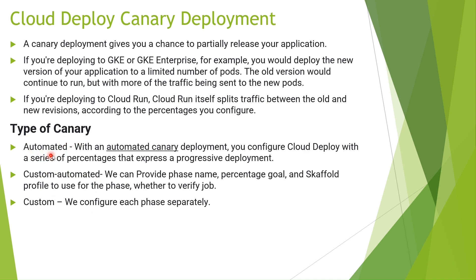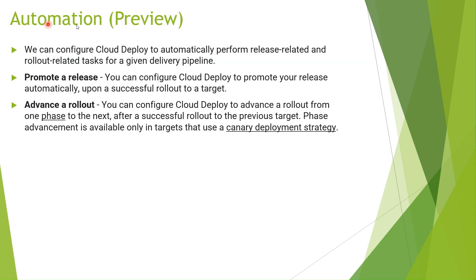In automated canary, we just provide a series of percentages for progressive deployment - like 20, 50, 80. We will check out how to configure that. After automated we have custom automated, where we can provide everything like phase name, percentage, goal, and scaffold profile. After that we have custom, where we configure each phase separately. I can show you the automated one - you just create a canary deployment and it does all the things. For custom automated it requires so much configuration; you can check the scaffold documentation and Google documentation.